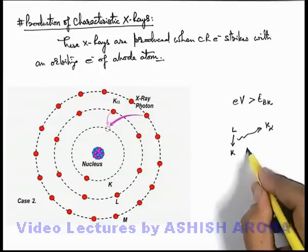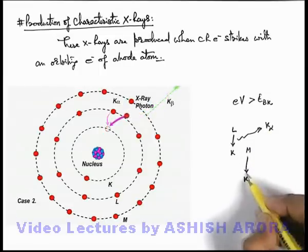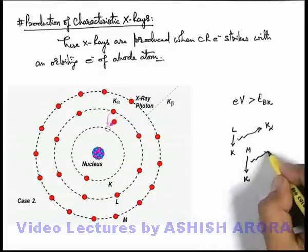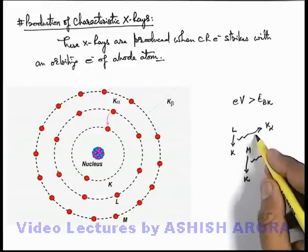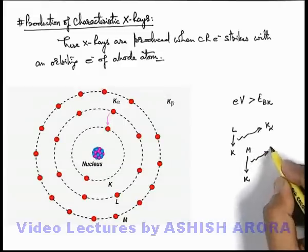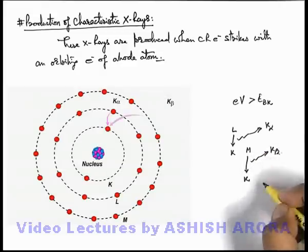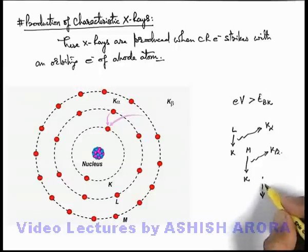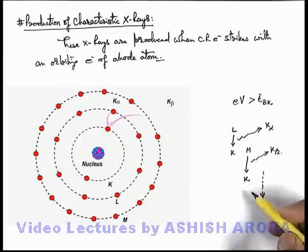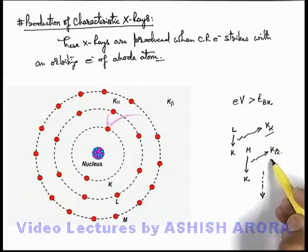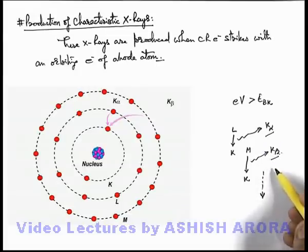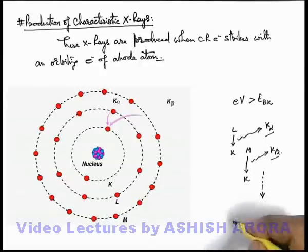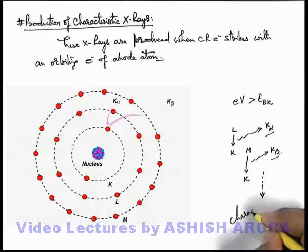And if an electron from the M-shell is transited to the K-shell — as it is the second shell after the K-shell — then the emitted x-ray is called K-beta x-ray. And so on, we can develop the nomenclature of x-rays emitted from the anode atom. But again, these x-ray photons have some specified wavelengths; not all wavelengths are emitted — that's why these are termed as characteristic x-rays.